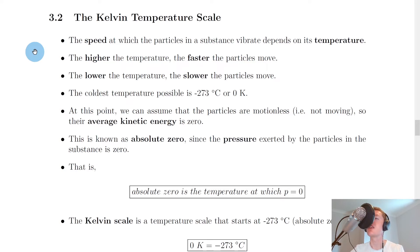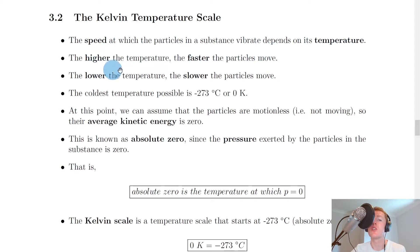Welcome back. In this video we're going to look at the Kelvin temperature scale. Instead of using the degrees Celsius scale for measuring temperatures, we're now going to think about the Kelvin temperature scale. It starts by saying the speed at which the particles in a substance vibrate depends on its temperature — the higher the temperature, the faster the particles move because they have more energy.